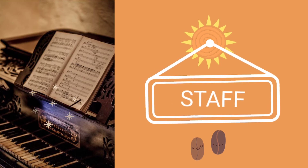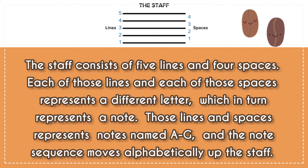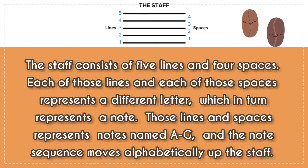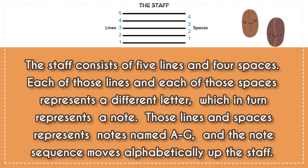Staff. The staff consists of five lines and four spaces. Each of those lines and each of those spaces represent a different letter, which in turn represents a note. Those lines and spaces represent notes named A to G, and the note sequence moves alphabetically up the staff.